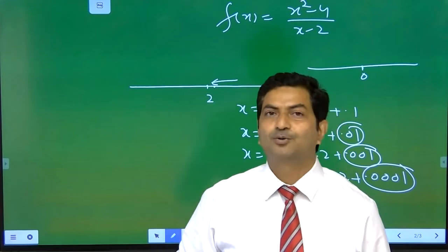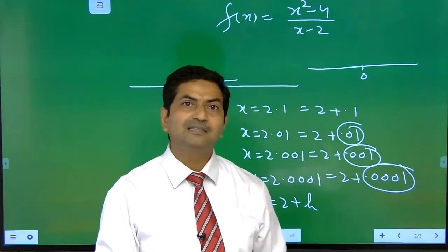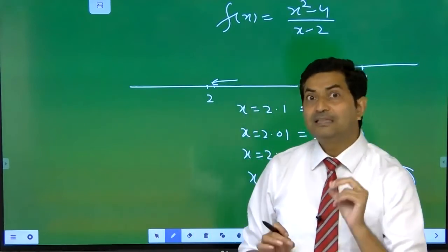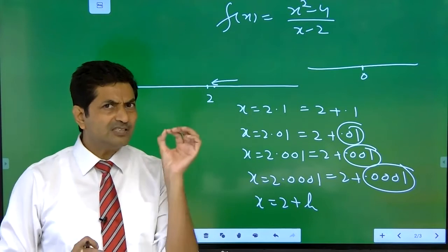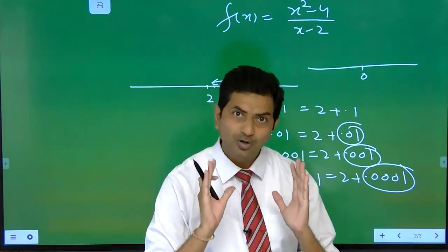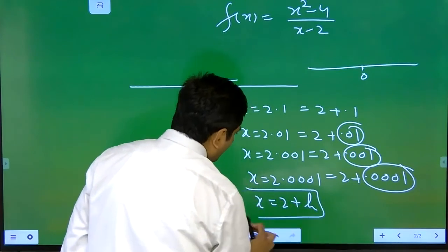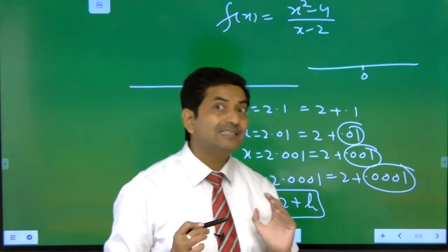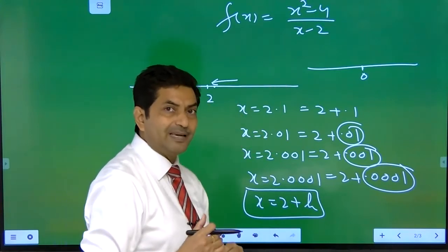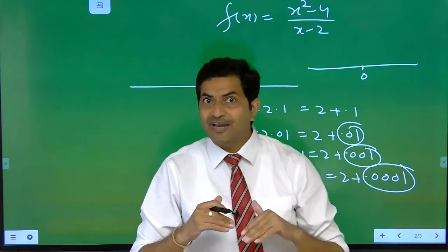H is the smallest positive real number, closest to 0 — just above 0. We denote that as h. So h is positive, not zero, but close to 0. If h is close to 0, then x = 2 + h is close to 2. Now we will see: if x is nearest to 2 at the right-hand side, then where is the value of the function tending towards?